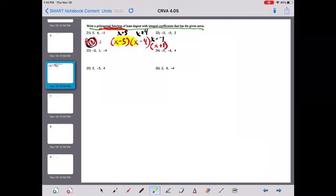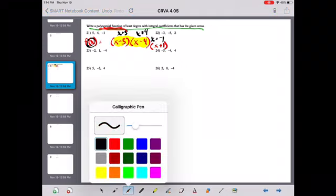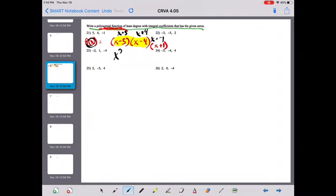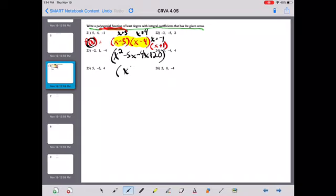Focus on only two at a time. So multiply those factors together. You're going to get x squared minus 5x minus 4x plus 20, which simplifies to x squared minus 9x plus 20.